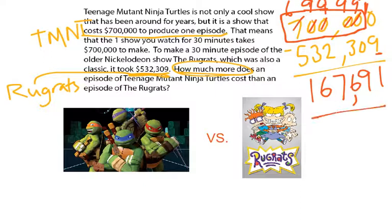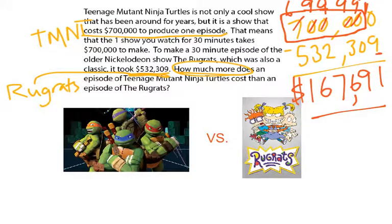And what is this? I'm talking about money, because it was asking me how much more. So I put my dollar sign to represent that I'm talking about money. It cost an additional $167,691 to produce the Teenage Mutant Ninja Turtles. I can agree because I think the animation looks just a tad bit more advanced on the Ninja Turtles than things looked on the first episodes of the Rugrats. Well, boys and girls, that was today's video. I hope that you have completed your accountability sheet as we've done this.